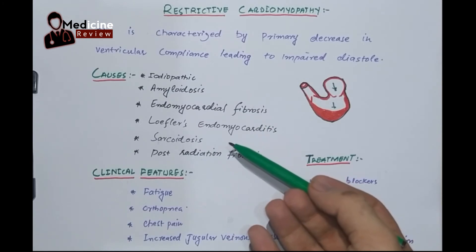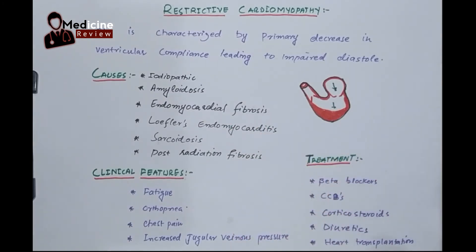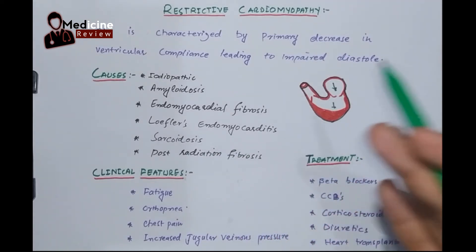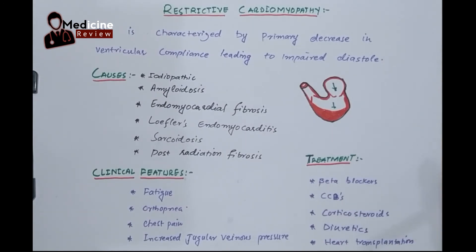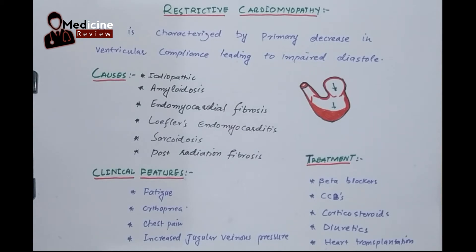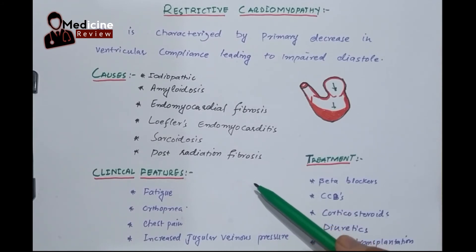Another secondary cause is endomyocardial fibrosis, where both the endocardium and myocardium become fibrosed, causing diastolic dysfunction. Another is Loffler's endomyocarditis, where the number of eosinophils becomes very increased and they deposit in the myocardium — usually seen in eosinophilic leukemia. Another is sarcoidosis, a granulomatous disease where many granulomas deposit on the myocardium. And another is post-radiation fibrosis, where a patient undergoing radiation therapy develops fibrosis of the myocardium.